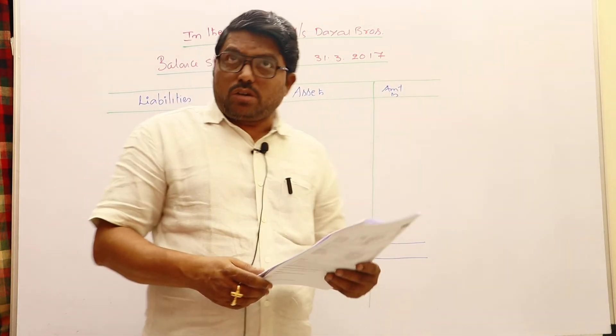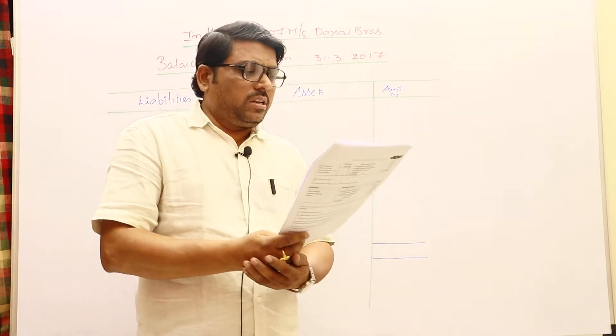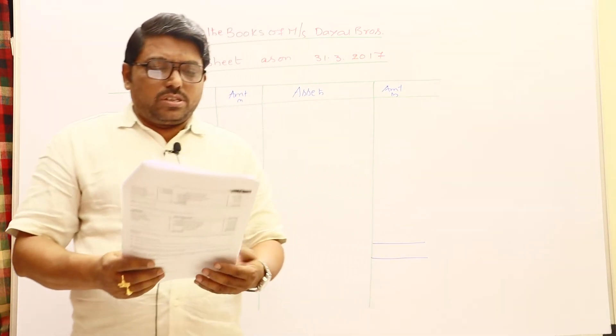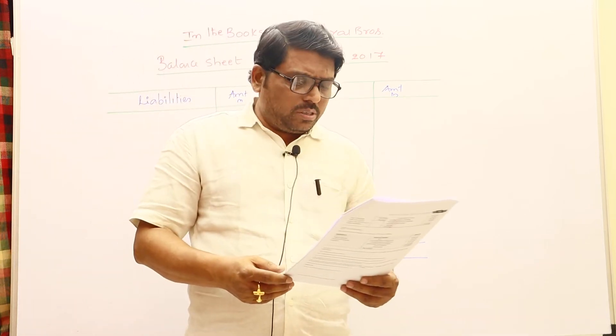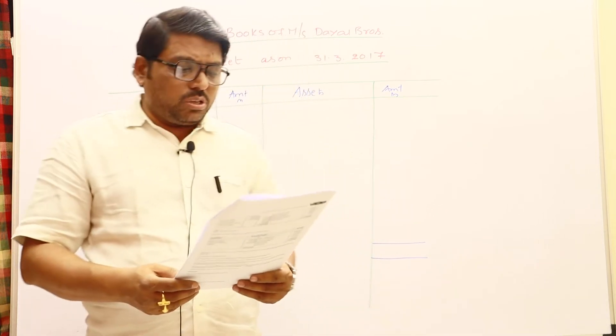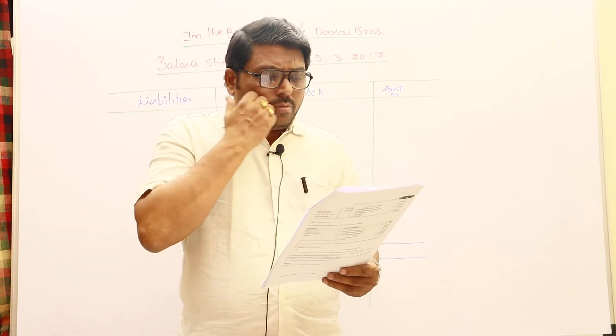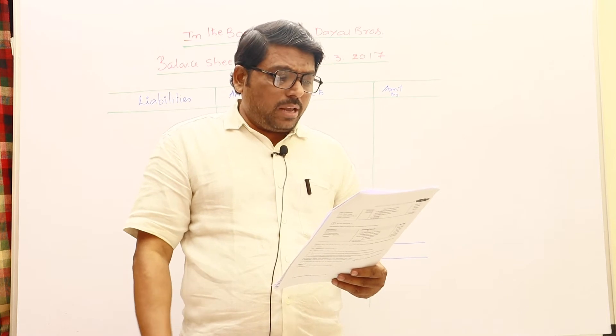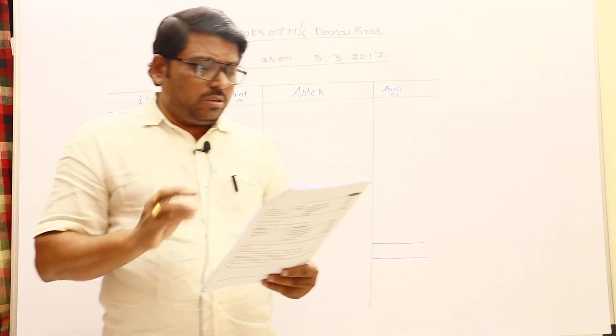Hi friends, today we are going to discuss from final accounts ICA study material illustration 6. Already all the earlier sums have been uploaded, please go through the playlist and watch them. Here we are going to prepare a balance sheet by the given trial balance. If you observe this trial balance, you can see only personal accounts and real accounts, but no nominal accounts are here.